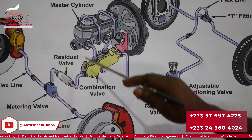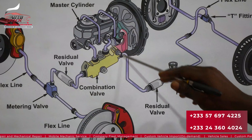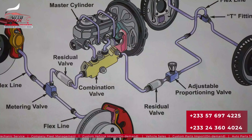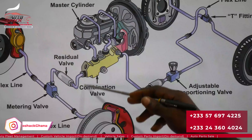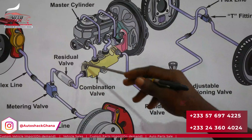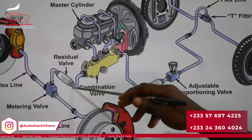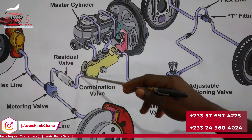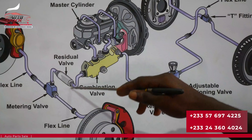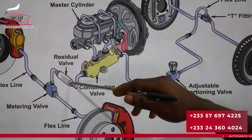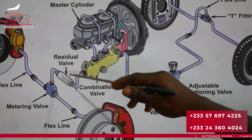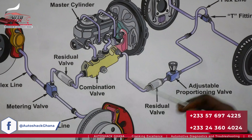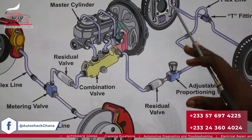At the front, the brake fluid moves into the residual valve, and at the rear it also moves into the residual valve. The function of the residual valve is to hold or maintain constant brake pressure in the lines.